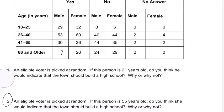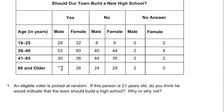In the first question, we're told that a voter is picked at random, and we're also told that they're 21 years old and that it's a he. So these are called conditions in probability. The conditions are that they're 21 years old and that they identify as he. So we want to know: would they indicate that they want to build a new high school, yes or no?